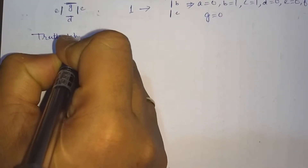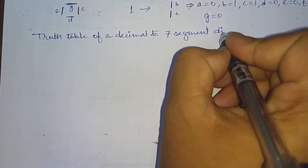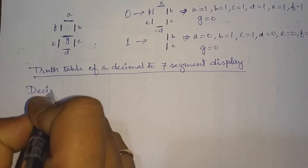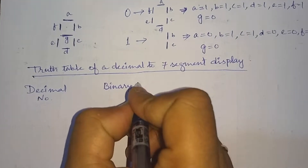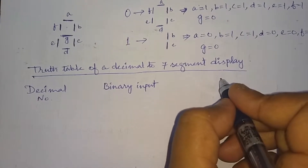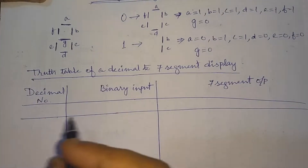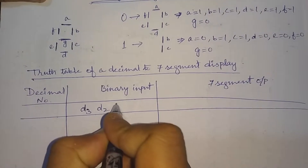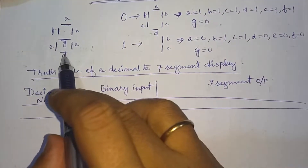Now we'll make the truth table of this decimal to 7-segment display. To represent the decimal numbers from 0 to 9, we require 4-bit representation. Here we'll write the decimal number, the binary input — that is the binary representation of the decimal number — and the 7-segment output. The 4-bit input is labeled D3, D2, D1, and D0, and the outputs are A, B, C, D, E, F, and G.